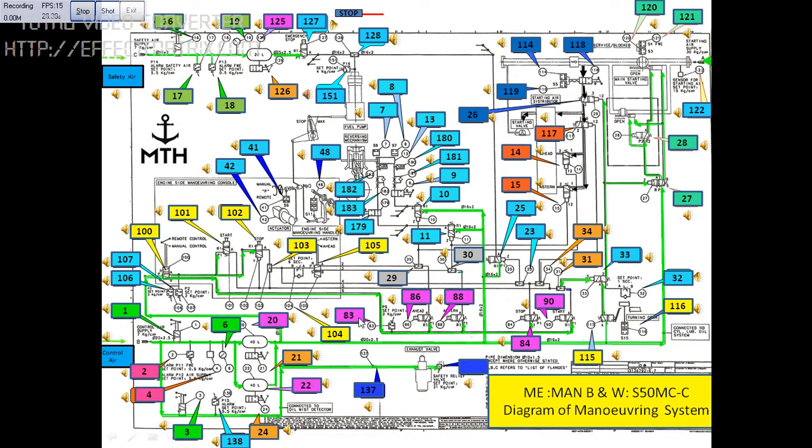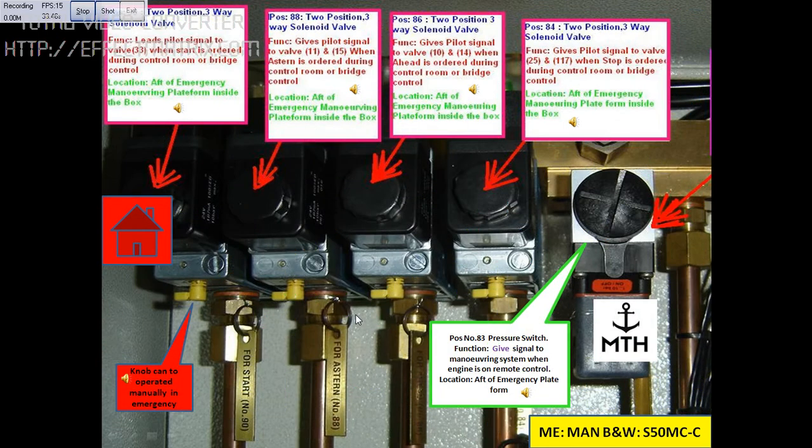I will click on the icon to go to the real picture on the ship. This component is position number 90, which is a two position three-way solenoid valve. The function of this block is to lead pilot signal to valve number 33 when start is ordered from control room or bridge control.